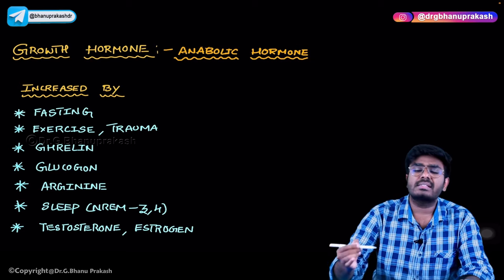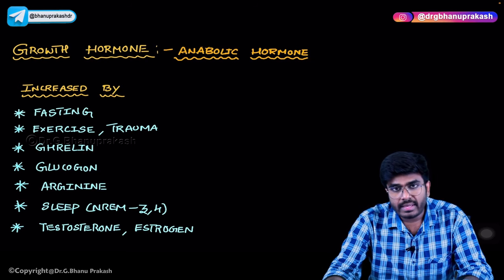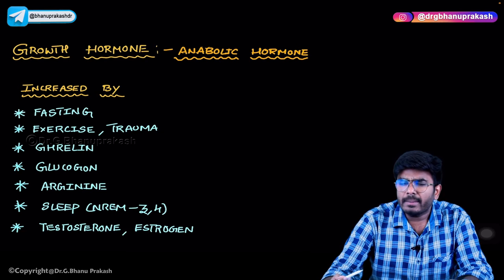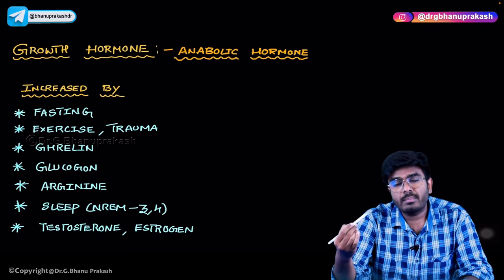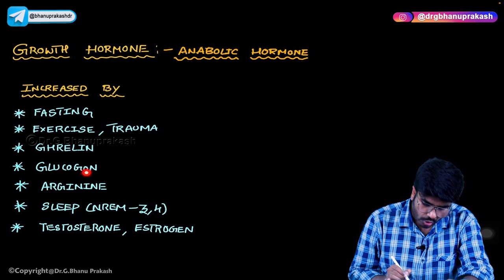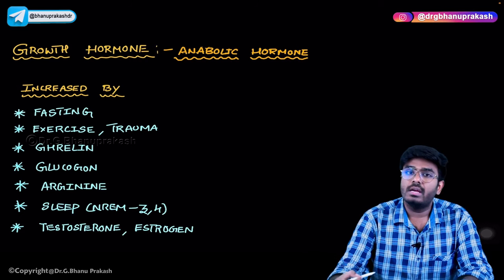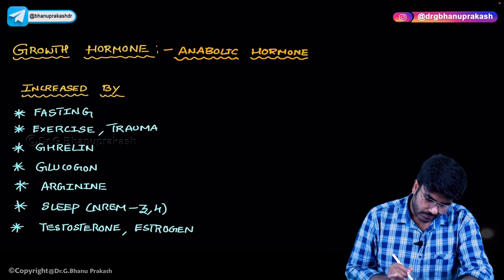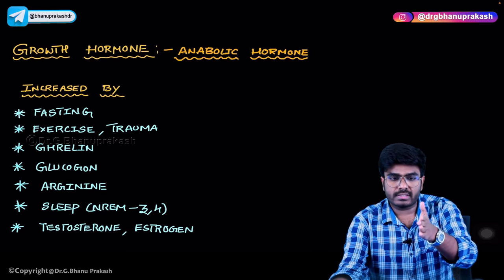Ghrelin also increases growth hormone production. During fasting states, ghrelin is present, it acts on the central nervous system and helps stimulate growth hormone. Glucagon — produced from the alpha cells of the islets of Langerhans when blood glucose is low — also increases growth hormone levels. So glucagon increases growth hormone, and growth hormone in turn increases blood glucose levels.